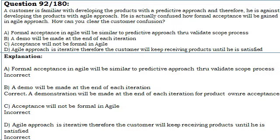Let us see the answer. A. Formal acceptance in Agile will be similar to predictive approach through validate scope process. Incorrect.